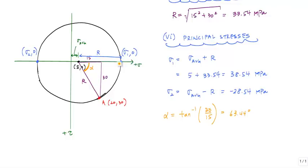In order to get to sigma 1, I have to rotate counterclockwise. So I'm going to draw an arrow indicating which way to rotate from A to get there. On my stress element, the angle that it would take to get me to sigma 1, my major principal stress, equals alpha over 2, which is 63.44 divided by 2, and that's 31.72 degrees, also counterclockwise.